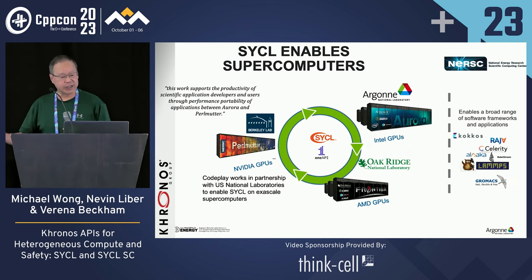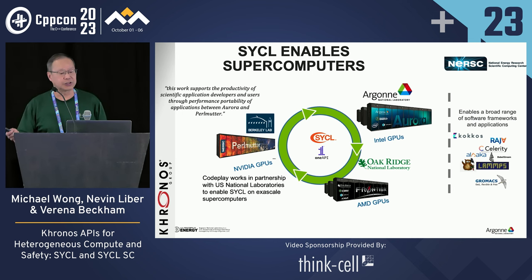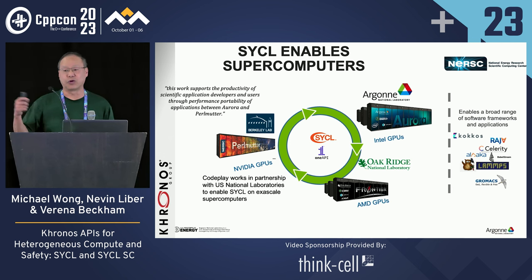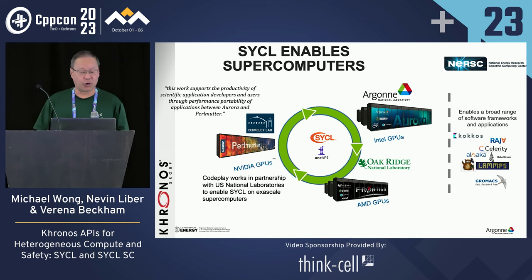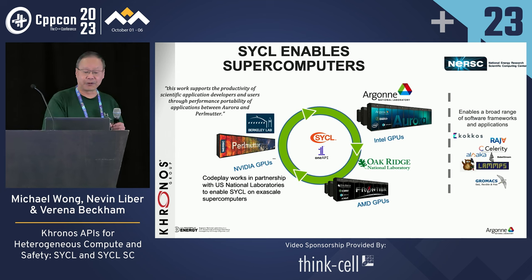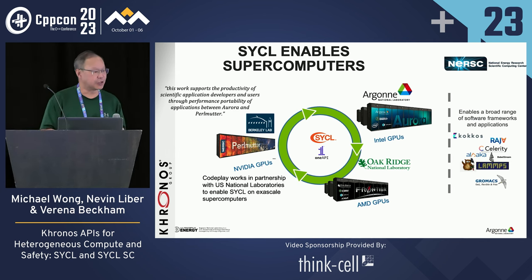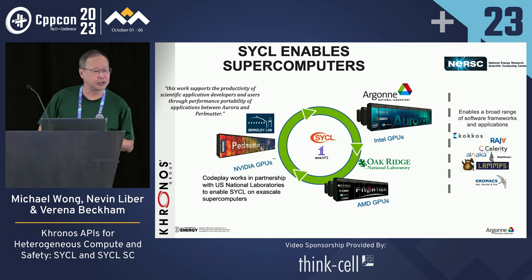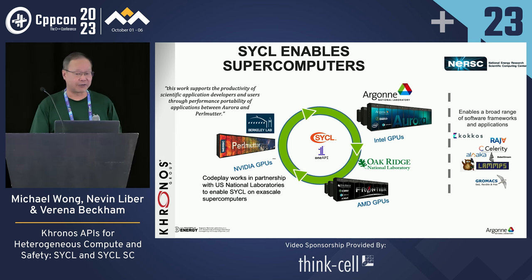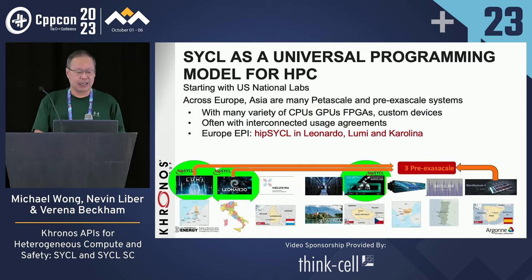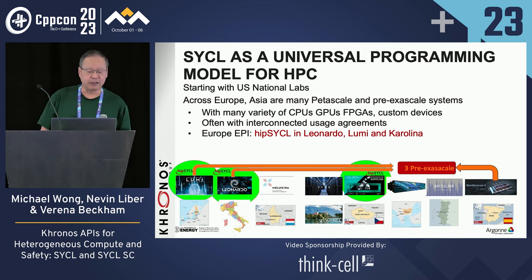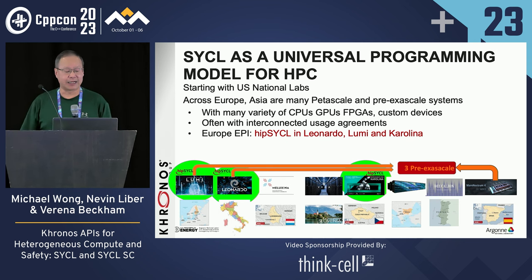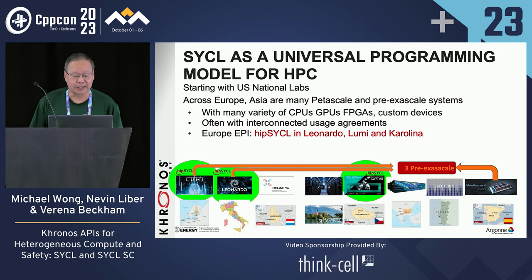SYCL enables supercomputers. SYCL is now being used in several US National Lab computers that have combinations of CPUs and different GPUs: Argonne National Labs with Intel CPUs and GPUs, Oak Ridge with AMD GPUs, and Perlmutter at Berkeley with Nvidia GPUs. This is why National Labs are interested — they don't have to rewrite code for every different kind of GPU. It is also being used in Europe in Lumi (Finland), Leonardo (Italy), and Karolina in the Czech Republic.